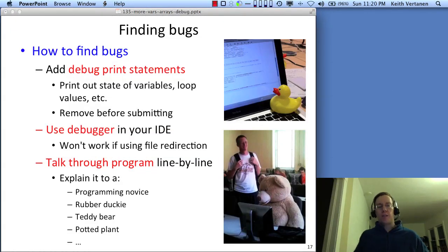So assuming you haven't avoided bugs, which you'll never completely do anyway, how do you find it? So your program is compiling and running, but it's not doing what you want. The first line of defense and a tried and true debugging method used by all programmers in every language is put in some debug print statements.